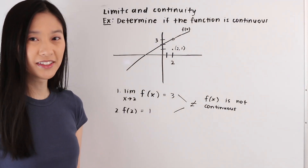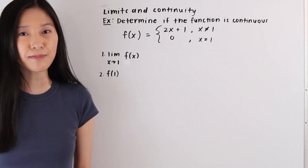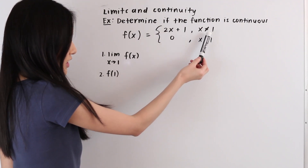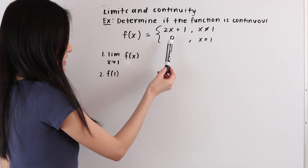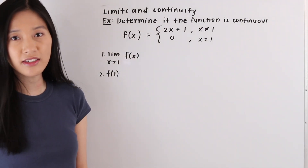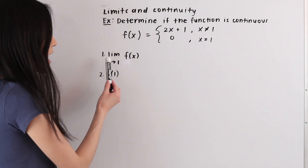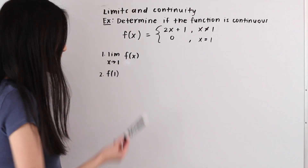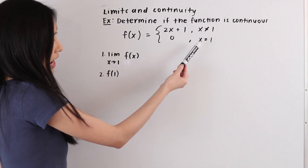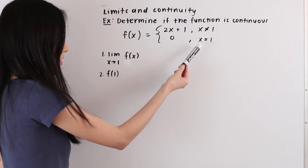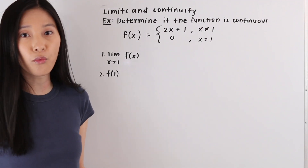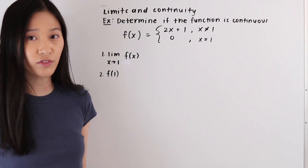Let's take a look at one more example. In this next example we are given the piecewise function f(x), where f(x) equals two x plus one when x is not equal to one, and f(x) equals zero when x is equal to one. We want to determine if this function is continuous. We can see from this piecewise function that we have a removable discontinuity at x equals one, so if we can prove the function is not continuous at that point, we prove it is not a continuous function.